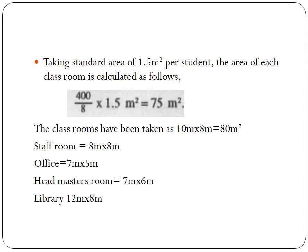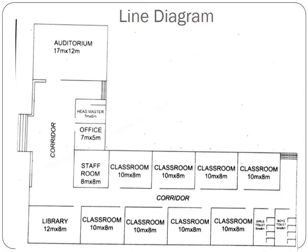Staff room size is taken as 8 by 8 meters, office as 7 by 5 meters, headmaster's room as 7 by 6 meters, and library as 12 by 8 meters. A 4-meter wide doubly loaded corridor takes care of circulation of the classrooms with a separate entry to the playground. The school comprises two zones: the public area including principal room, staff room, and auditorium; and the main school zone including classrooms, toilets, staff room, and library. The staff room is common to both zones and binds them together.